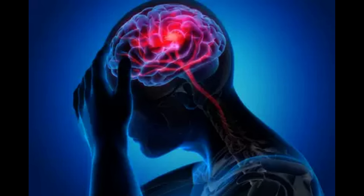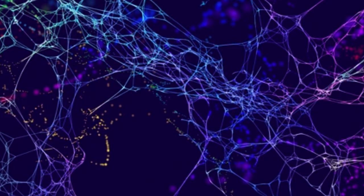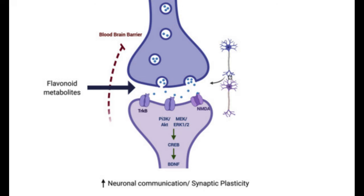The brain consists of billions of neurons that are connected by synapses, and these connections are continually being modified and strengthened or weakened based on the experiences a person has. Synaptic plasticity is facilitated by several molecular and cellular processes, including changes in the expression of genes, the formation of new synapses, and the modification of existing ones.